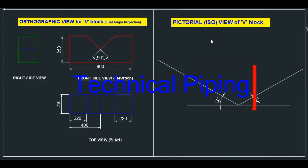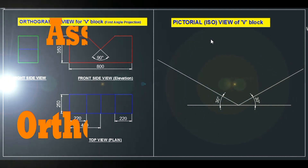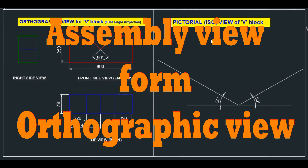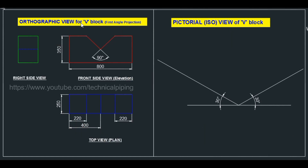Hi friends, welcome to Technical Piping channel. Today we will see how to draw the assembling view or isometric view from an orthographic view. Here we have an example orthographic view for a V-block.